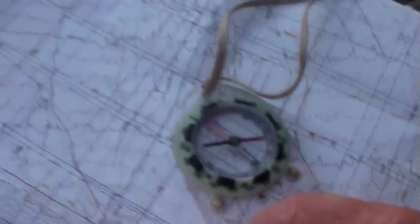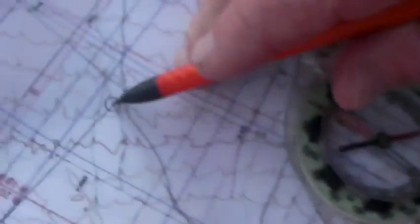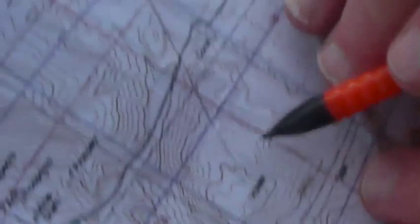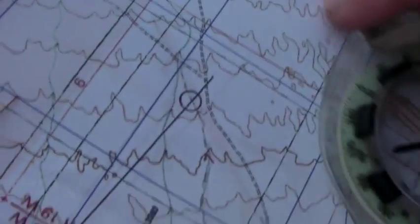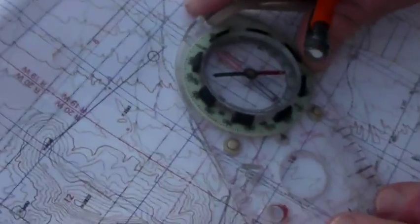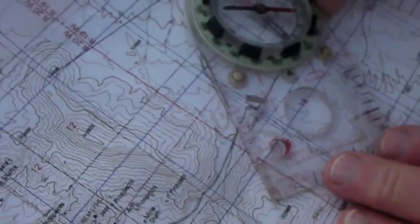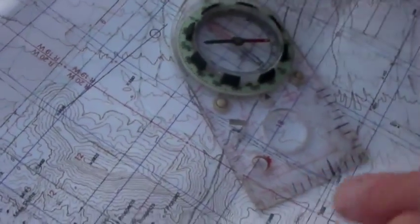So let's plot a bearing on the map from our known location here to this hilltop. I've already drawn a line from the hilltop back to my location. I place the base plate of my compass along that line pointing to my target hilltop.